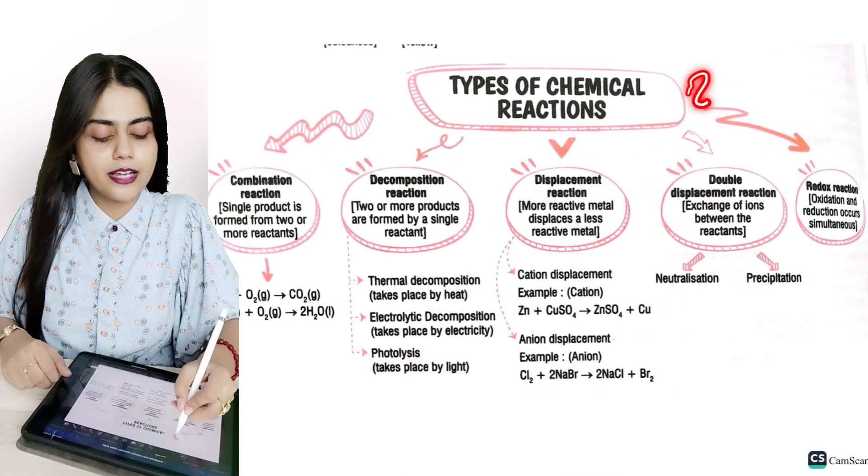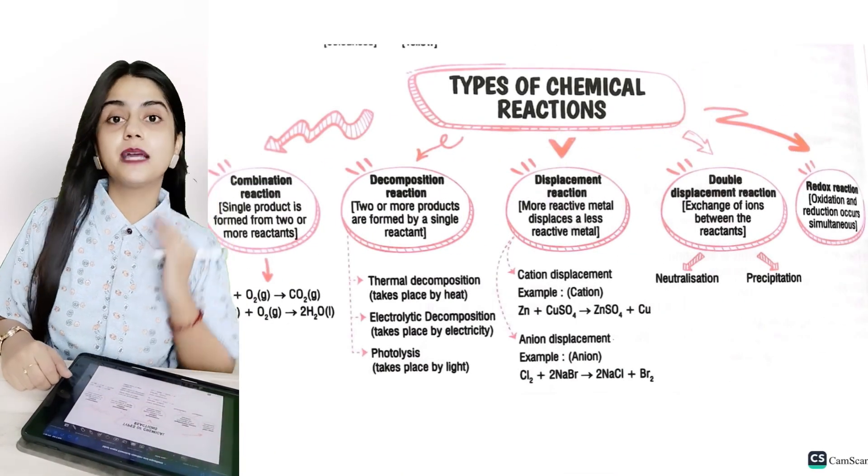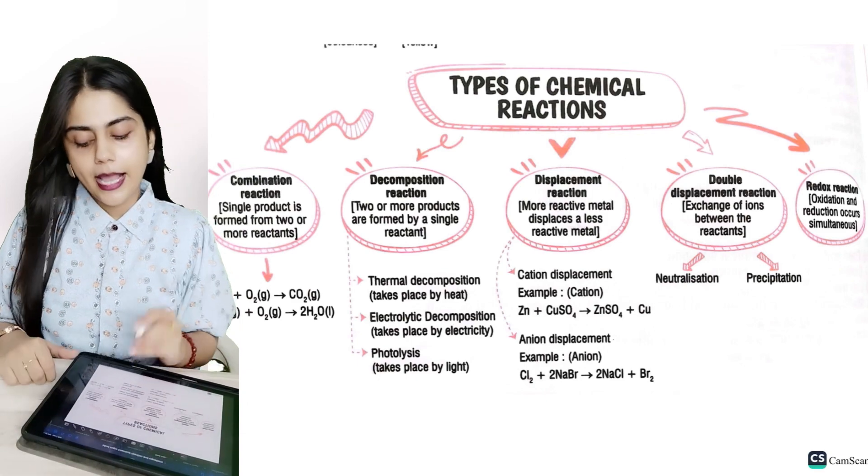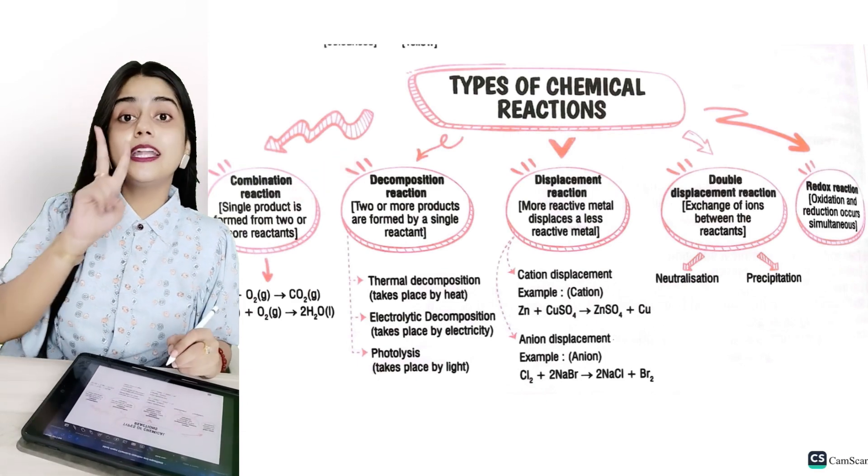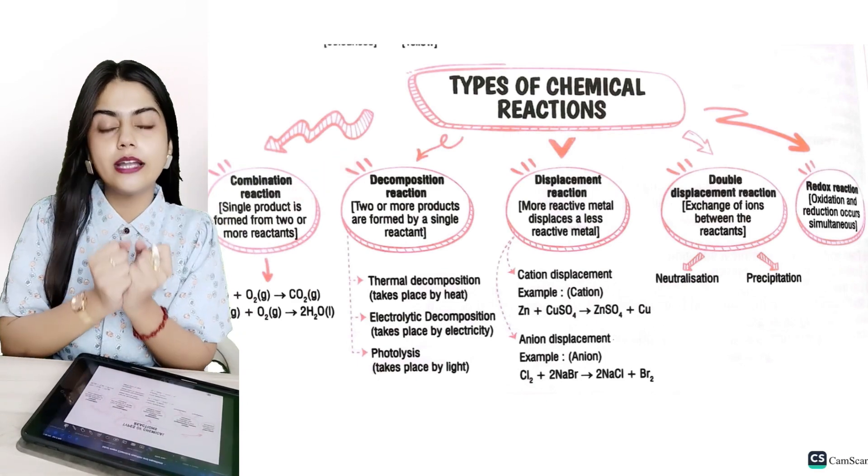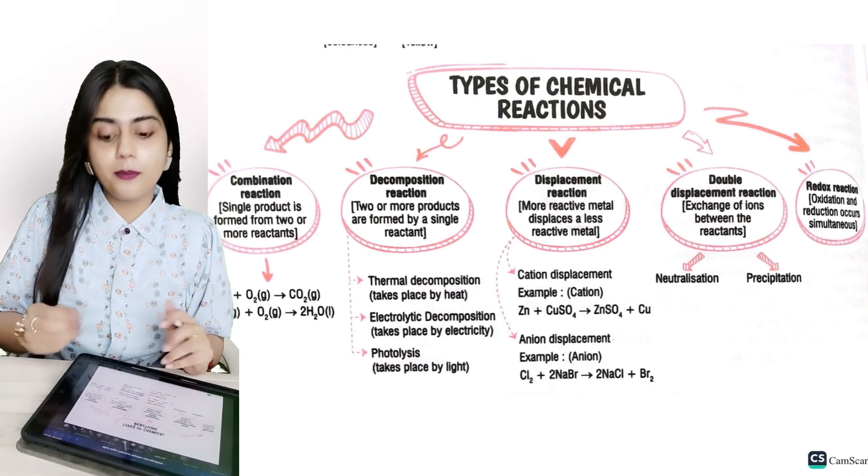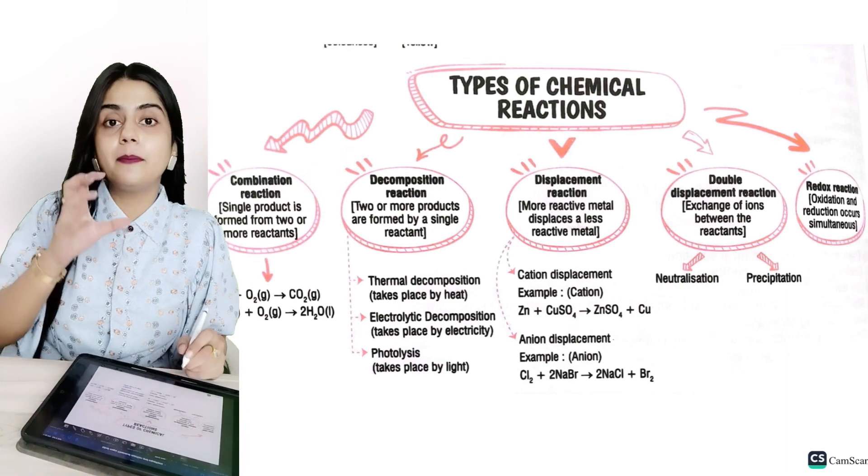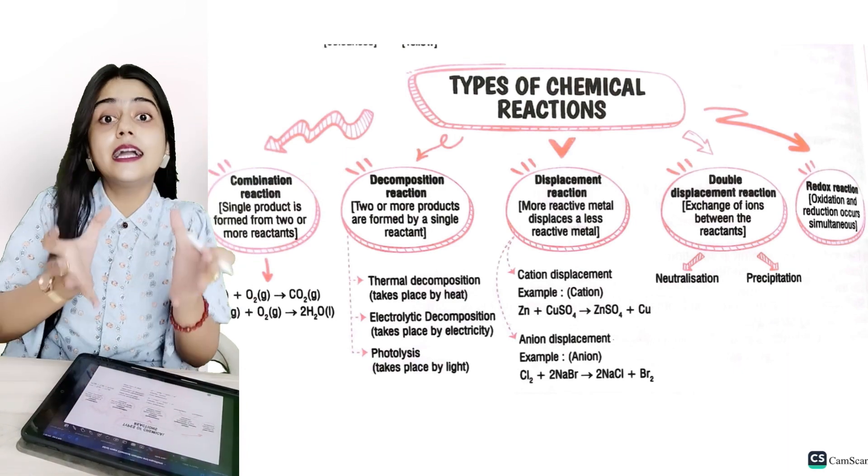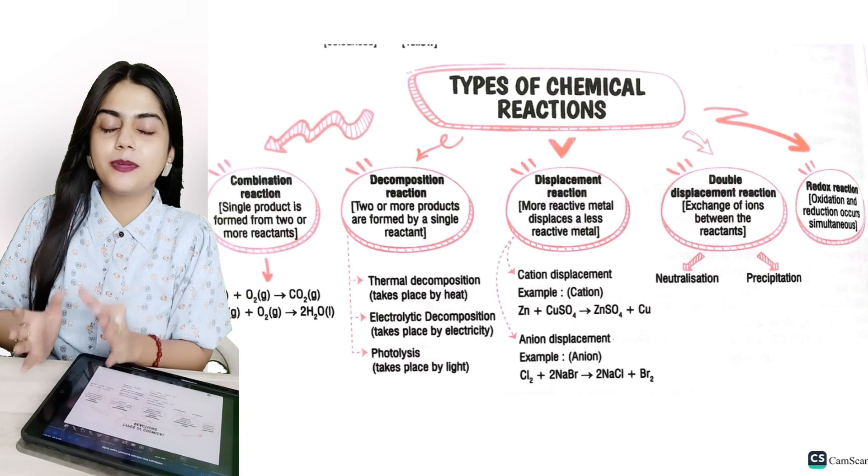Let's discuss the type of chemical reaction. In this chapter, we will read the past type of chemical reaction. First, combination reaction. When I have two reactions combined and made a product, what happens? Combination reaction. When I have two reactions combined and made a product, then the combination reaction is performed.